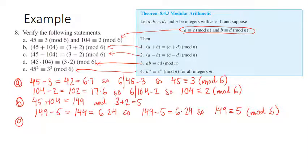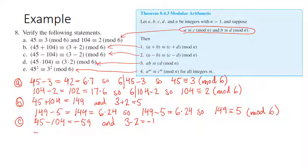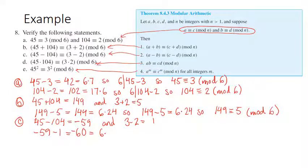For part C, subtracting: 45 minus 104 is negative 59, and 3 minus 2 is 1. Negative 59 minus 1 is negative 60, which is 6 times negative 10. So 6 does divide this difference, meaning negative 59 is congruent to 1 mod 6.